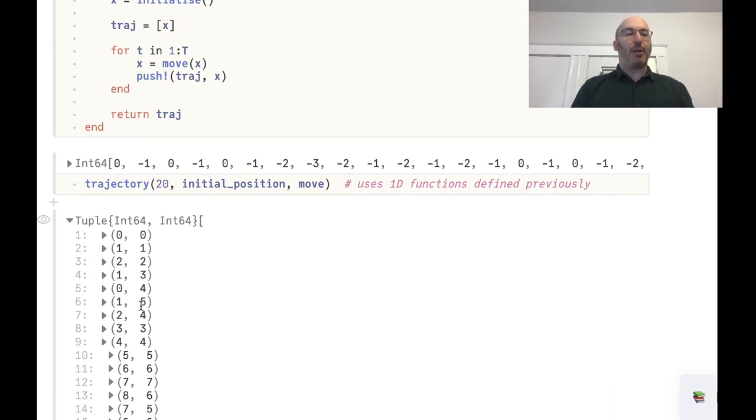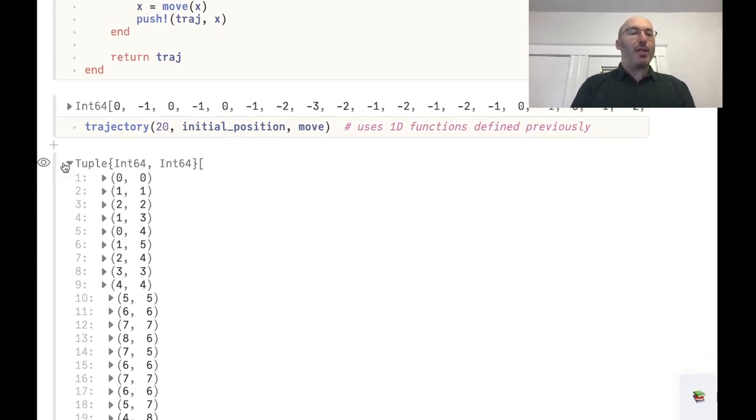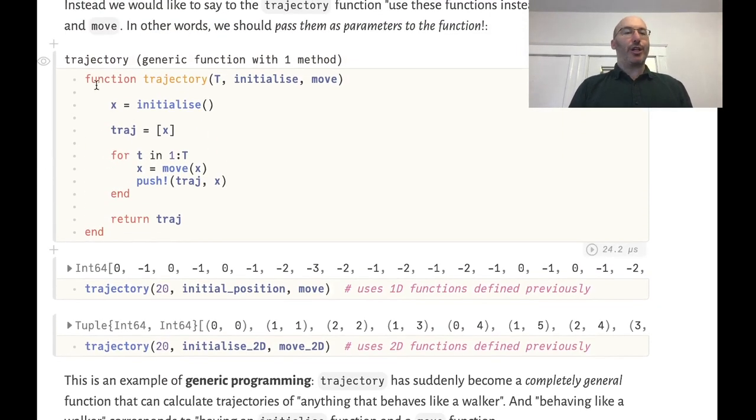However if I now pass in these two-dimensional functions I get the trajectory of a two-dimensional walker. So it's returning a vector of tuples now.